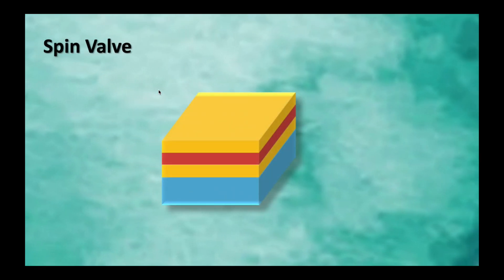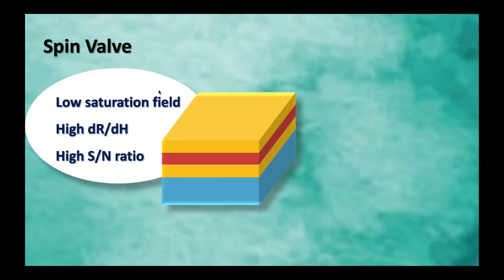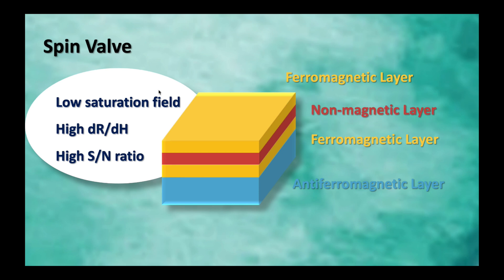So scientists developed a better structure to solve the problem. That is spin valve. It only consists of four layers. And the first three layers are the same as before. At the bottom, we add an additional layer. It is called anti-ferromagnetic layer. This layer will lock the magnetization of the second ferromagnetic layer. So it won't change unintentionally. This structure is much easier to fabricate and also gets better performance than the original structure.